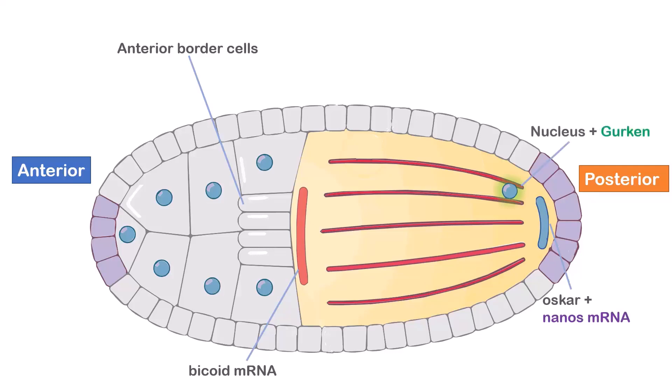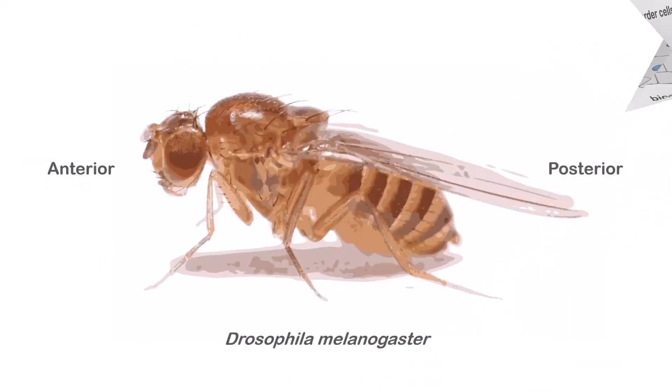The nucleus, with its associated Gurken proteins, migrates along the microtubules to the dorsal anterior region of the oocyte and induces the adjacent follicle cells to become the dorsal follicle cells. And thereby, finally, the axis formation is completed.